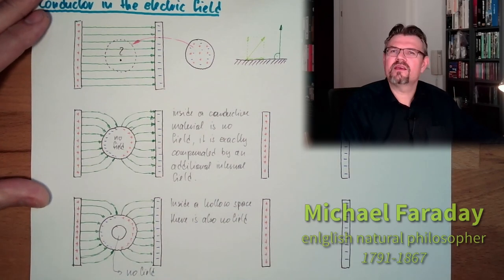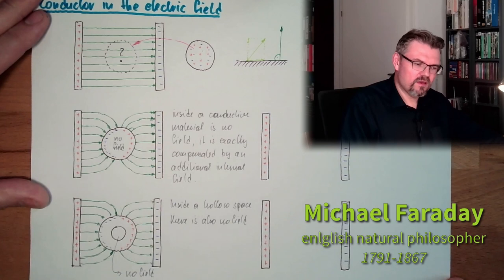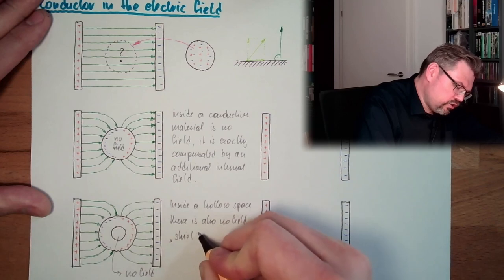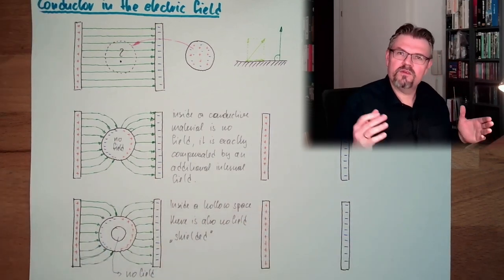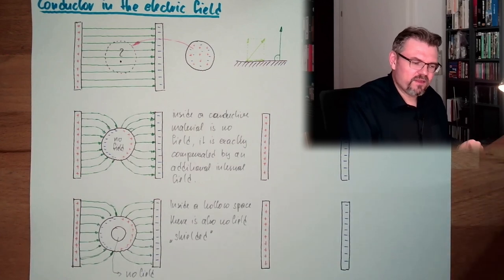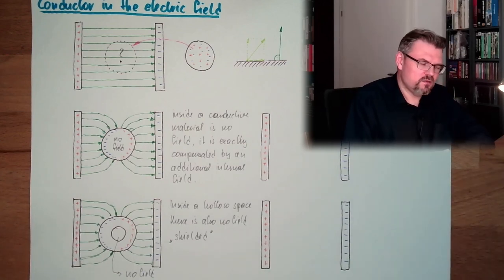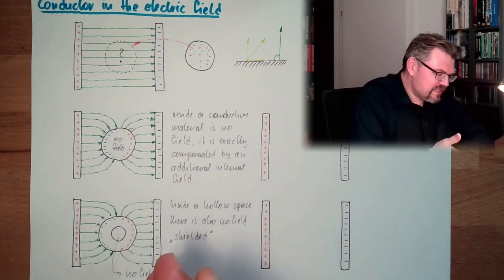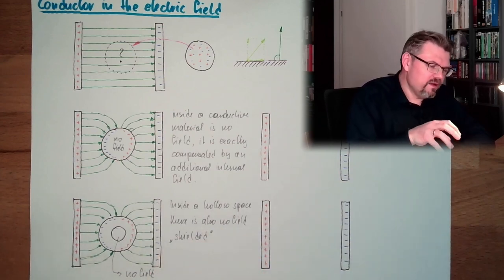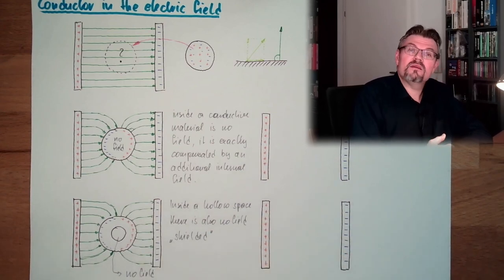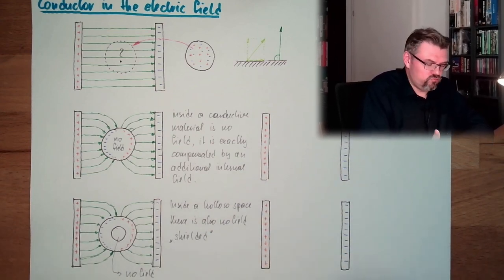This thing is called a Faraday cage. The electric field is shielded by this conductive hull — there is nothing inside. This is what happens when you have conductive material: the arrangement of the movable charges alters everything, and inside there is no field.